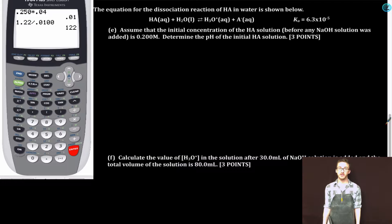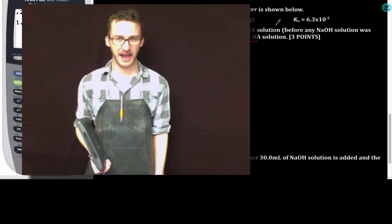The equation for the dissociation reaction of HA in water is shown below. Part E: Assume that the initial concentration of the HA solution before any NaOH solution was added is 0.200 molar. Determine the pH of the initial HA solution. pH of the initial HA solution. Well, we know that HA is a weak acid. And if I want the pH of a weak acid solution, you guessed it, ice table time.